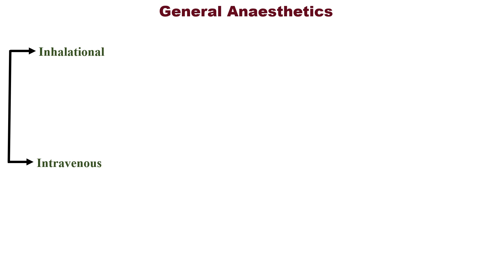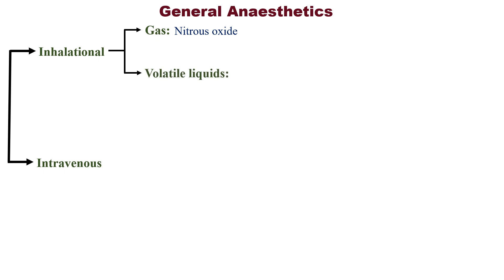Inhalational anesthetics are divided into a gas — there is only one gas, which is nitrous oxide — and volatile liquids. Volatile liquids can be given through the inhalational route to cause loss of sensation and consciousness.